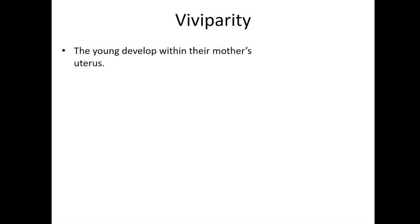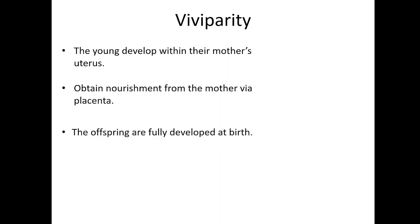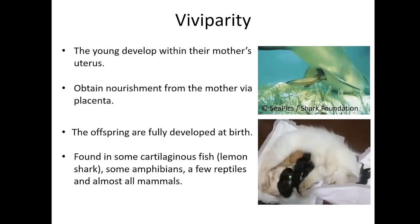In viviparity, the embryo develops within the mother's body and receives nutrients from the mother through a placenta. The offspring develops in the female's body and is born alive. This form of reproduction occurs in most mammals, some cartilaginous fish such as the lemon shark, and a few reptiles.